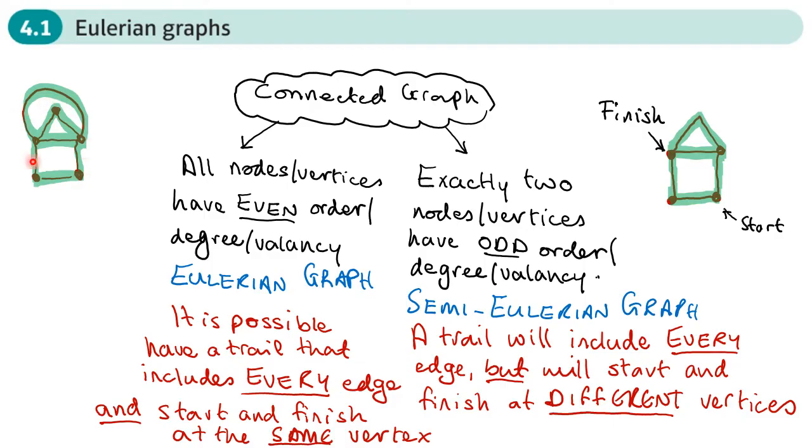Now just going back to this one briefly, this trail that we took that went to every edge and started and finished in the same place, this is known as a Eulerian circuit.